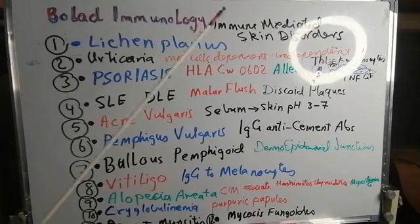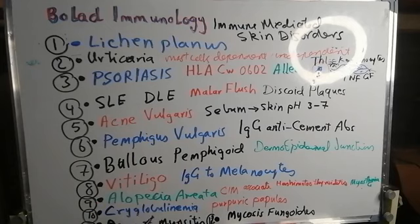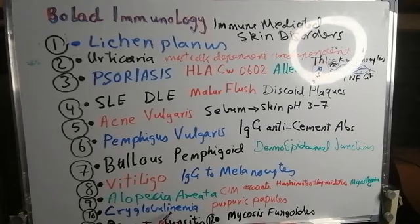Another example of an immune-mediated skin disorder is cryoglobulinemia. Patients with cryoglobulinemia present with purpuric papules, and it is due to abnormal antibodies that precipitate at low temperature.